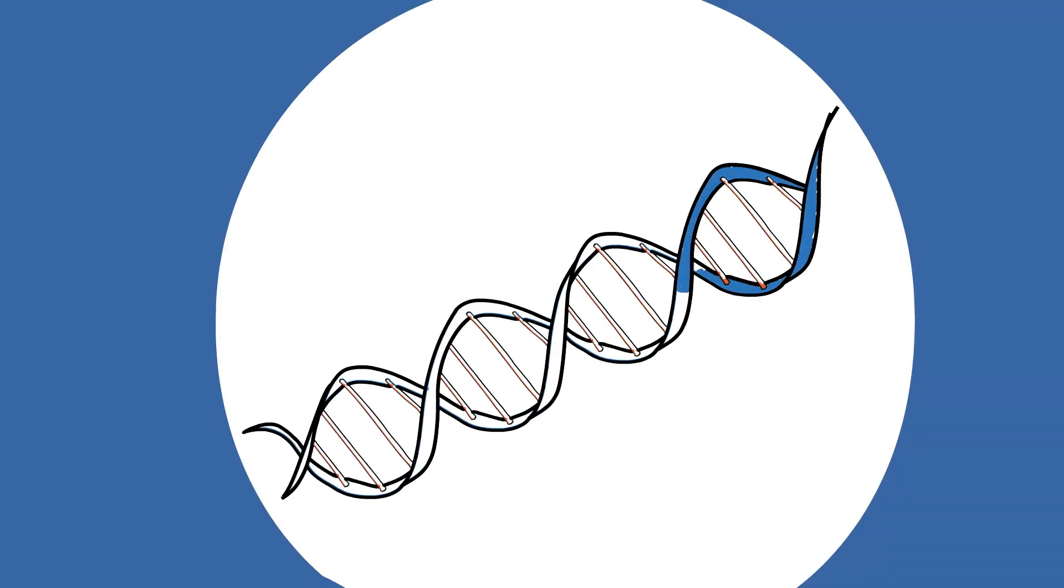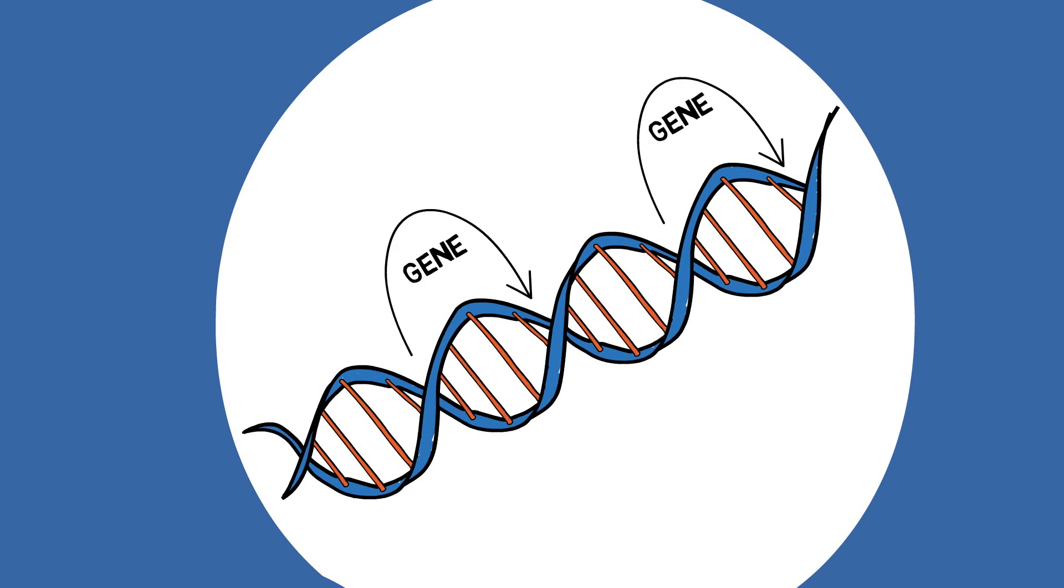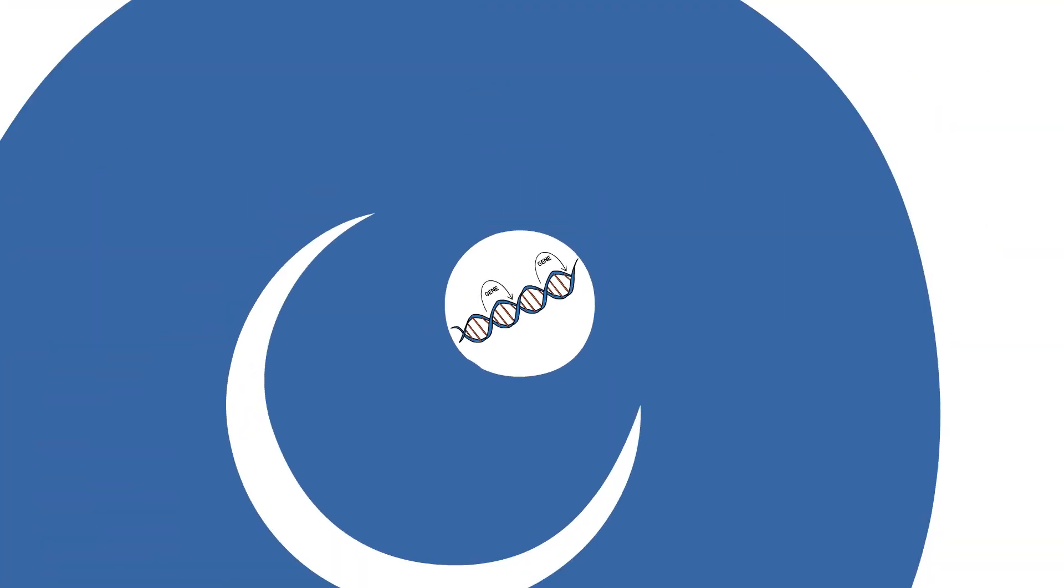DNA is a long molecule that acts like a set of instructions for making a person. It is split into smaller sections called genes. These explain how to make one small part of you, such as the colour of your eyes.